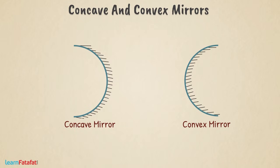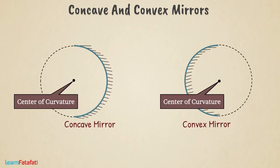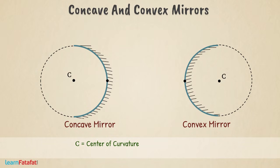A spherical mirror is assumed to be a part of sphere whose centre is called centre of curvature, denoted by capital C. Spherical mirror also have centre called as pole. It is denoted by capital P.